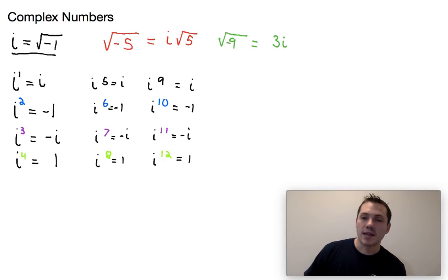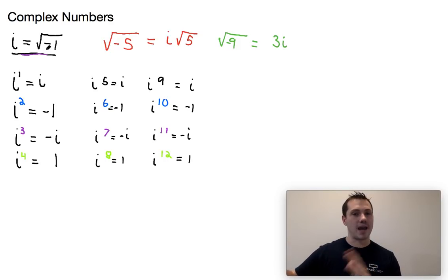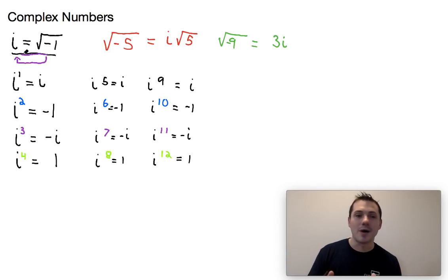Now the most common mistake I'll see students make is a lot of times a problem will be presented to them where i will actually be in the problem. And what they try to do is they try to use this property up here that i is equal to the square root of negative 1 and replace i with the square root of negative 1. You never really want to do that on the SAT or ACT. There are other math courses where you may have to do that, but for the SAT and ACT it's really a one-way street where you're pretty much only ever going to take the square root of negative 1 and turn it into i. So if you see i, don't try to make it the square root of negative 1. That's not going to be too helpful for you.